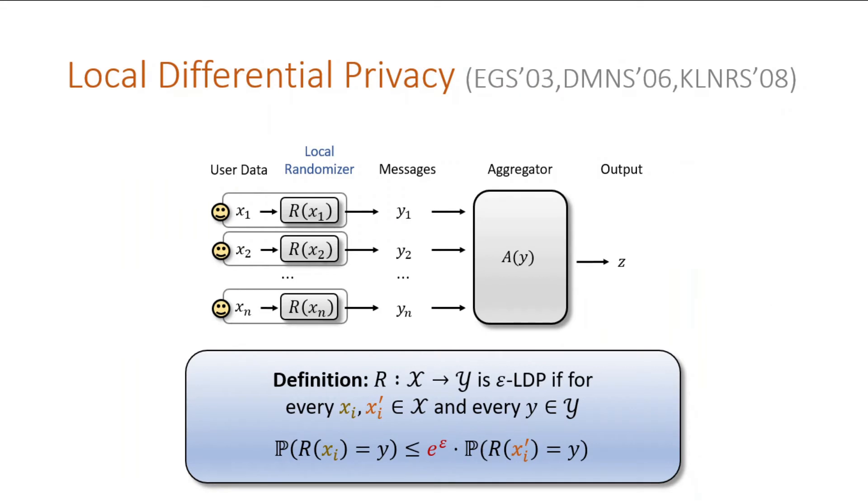To be more precise with our definitions, we're going to focus on randomizers that are epsilon locally private, which means that any pair of inputs results in a pair of output distributions that are close up to an epsilon factor. By this, I mean the distributions are multiplicatively close point-wise. The closeness factor is e to the epsilon, but we'll think of this as 1 plus epsilon. We'll treat epsilon as a value less than 1 to simplify presentation, but our results hold for larger epsilon as well.